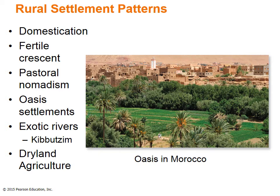Permanent oasis settlements dot the arid landscape where high groundwater levels or modern deep water wells provide reliable moisture. These communities are often walled, filled with mud houses, and sit adjacent to intensely utilized fields where underground water is carefully applied to tree and cereal crops. Date palms and irrigated fields shape the landscape around Tinerhir, a fertile oasis settlement in central Morocco.